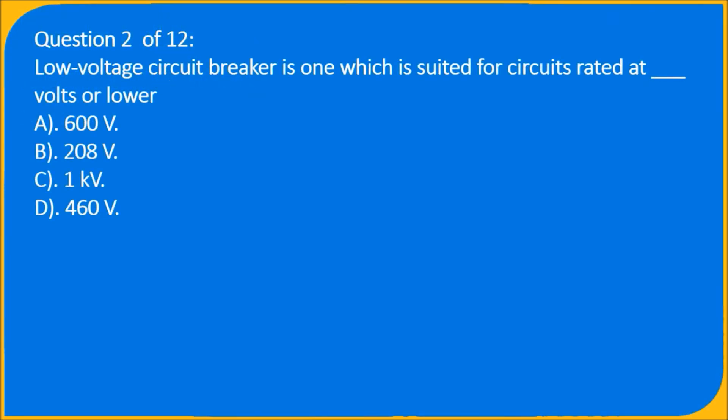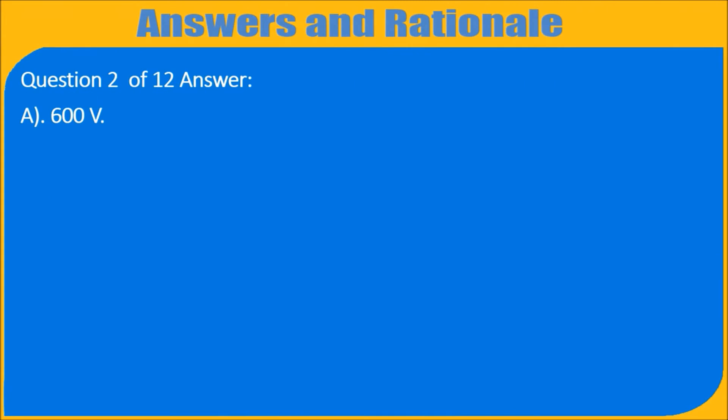Question 2 of 12: Low voltage circuit breaker is one which is suited for circuits rated at underscore volts or lower. A) 600 V, B) 208 V, C) 1 kV, D) 460 V. Question 2 of 12 answer: A) 600 V.